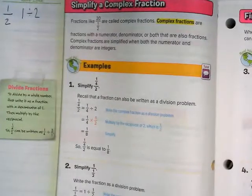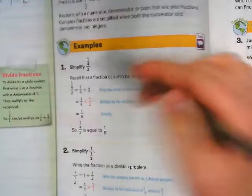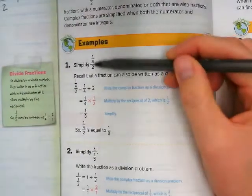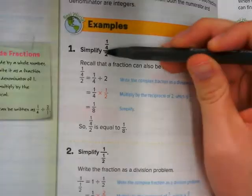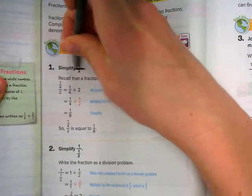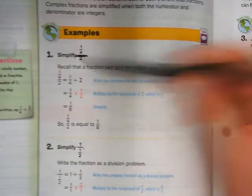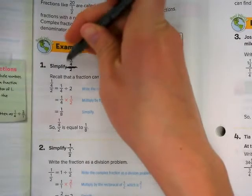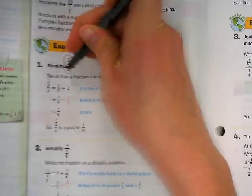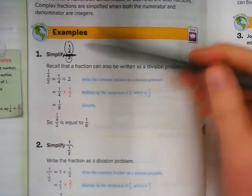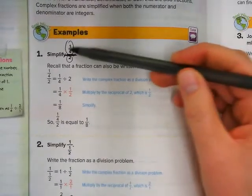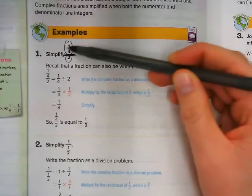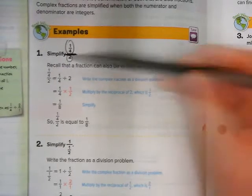Let's take a look at one example. Here they say simplify 1 4th over 2. I can see how this line right here is a little bit longer. What I'm going to do is make that line even longer so I can see this is the numerator of the fraction. This is the denominator of the fraction. So I know it's 1 4th over 2.